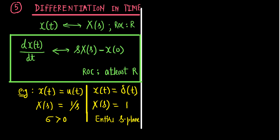This example demonstrates that the differentiated signal δ(t) has Laplace transform 1 with ROC being the entire s-plane — larger than the original ROC of sigma > 0. So the ROC is at least R, but can be more. That is the differentiation in time property of the Laplace transform.